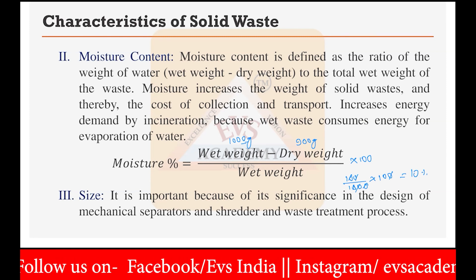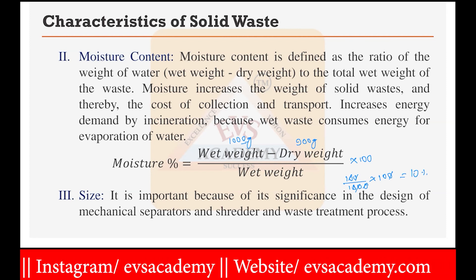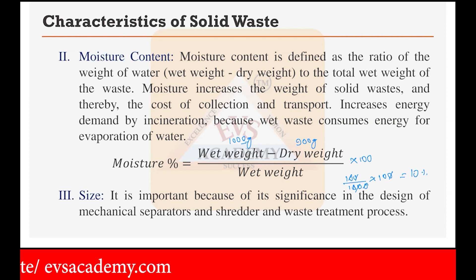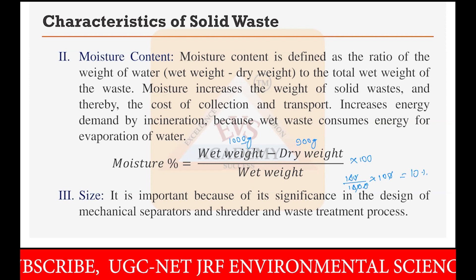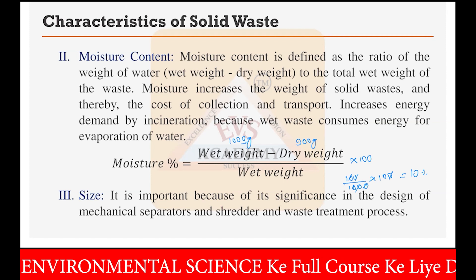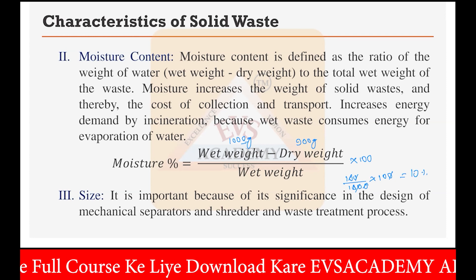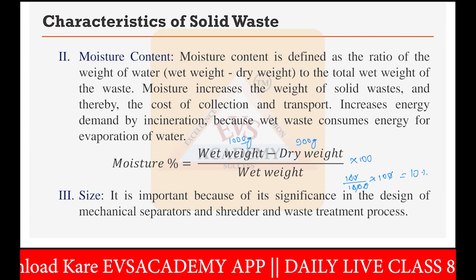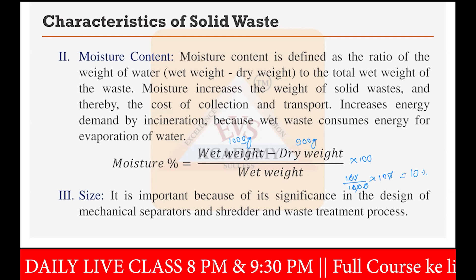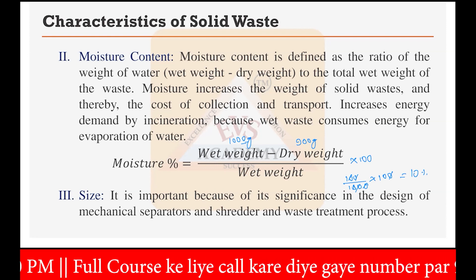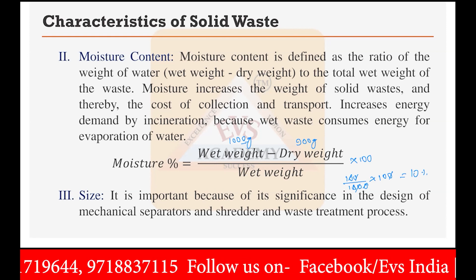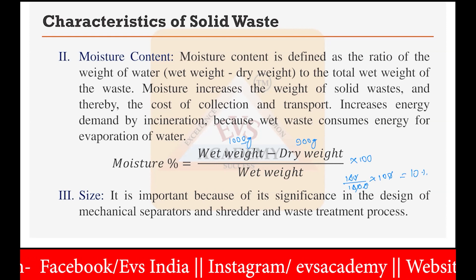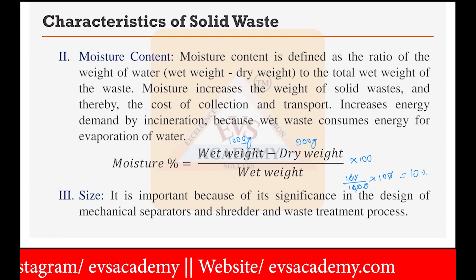Moisture increases the weight of solid waste — the dry weight is 900 g but 100 g of water is added, increasing the weight — and thereby the cost of collection and transport also increases. High moisture content increases energy demand for incineration because first you have to vaporize all the moisture before burning. Wet waste consumes energy for evaporation of water first, and only then does incineration take place. So it is not good to have high moisture content in waste going to incinerators.